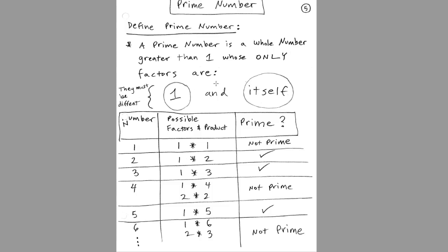So 1 and itself always have to be two different numbers — it can't be 1 and 1, because then they would be the same, not different. 1 cannot be a prime because of our definition requiring greater than 1, and also because those two factors have to be different.